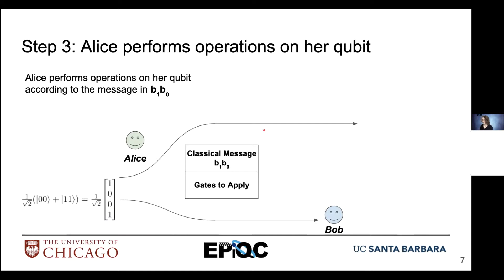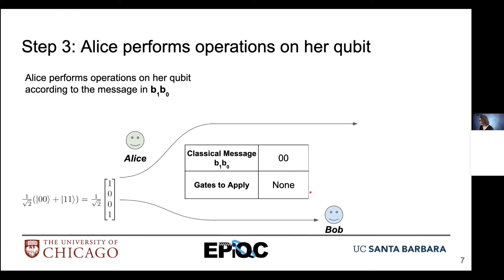Step three: Alice performs a couple of operations on her qubit to encode the classical information onto her half of the entangled pair. If her classical message B1 B0 is equal to 00, she applies no gates to the qubit in her possession.